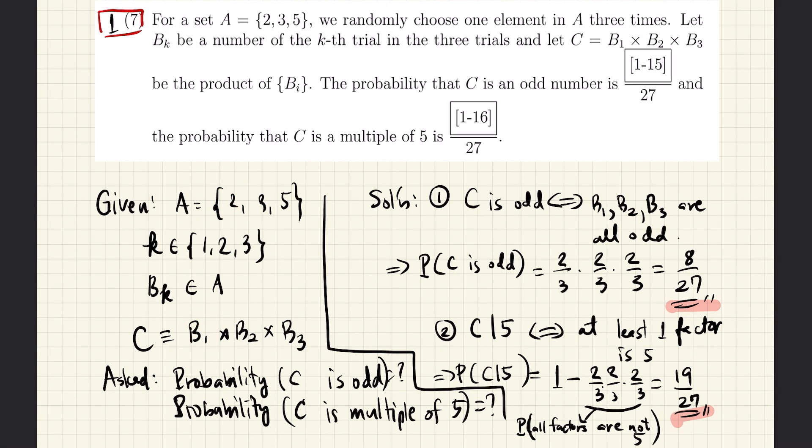And so for B1, there is a probability of 2 numbers, which is 3 and 5, out of the 3 possible numbers, and that probability is 2 thirds. For the second trial, the same probability applies. Again, we only have to pick 3 and 5, and that is 2 out of the 3 numbers. So again, that's 2 thirds.